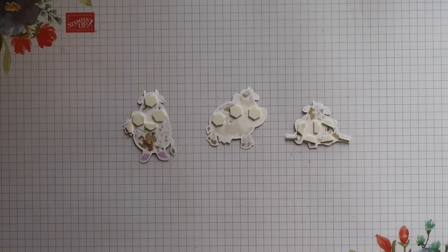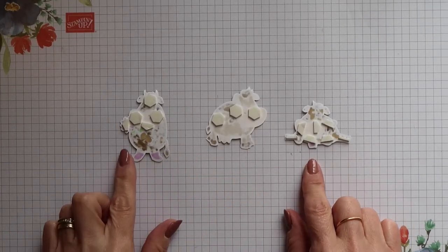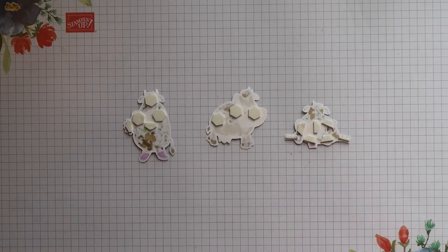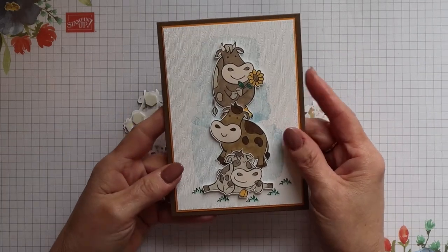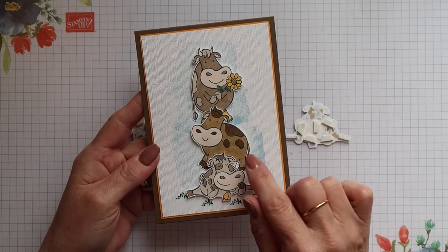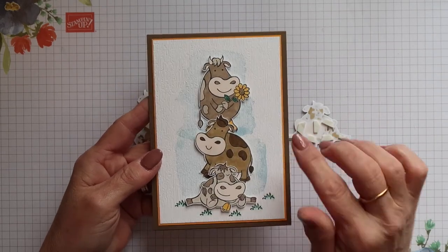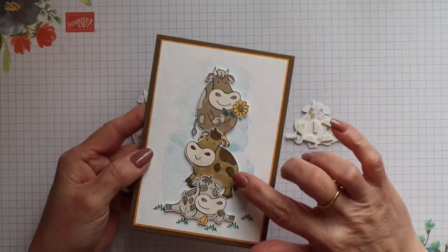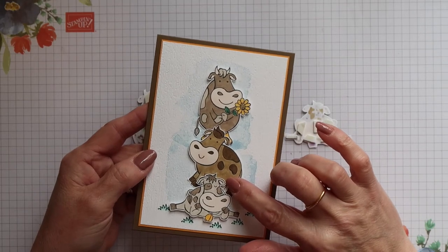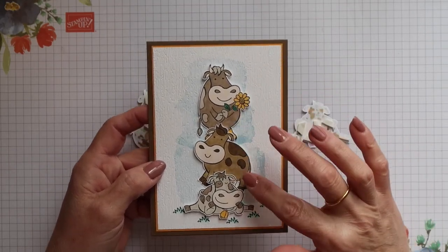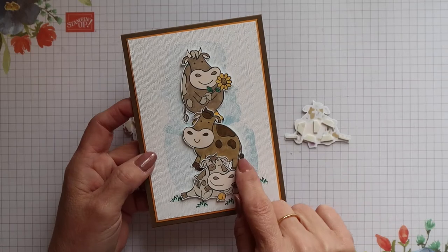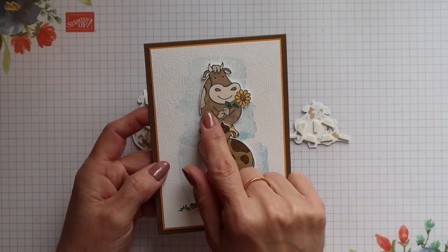I've gone ahead and added dimensionals to the reverse of each of the images. Now you don't want to cover them completely, the images overlap and where they overlap the bottom image is going to be glued flat to the card and the top of the image is going to be raised up. This gives a lovely dimension to the card.